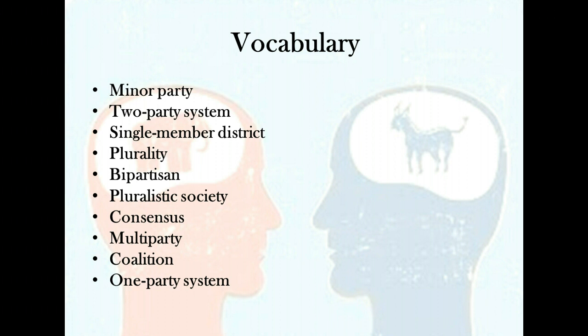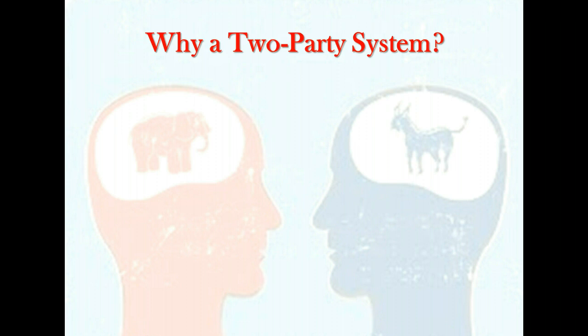Does the name Earl Dodge mean anything to you? Probably not. Yet Mr. Dodge has run for President of the United States five times. He was the presidential candidate of the Prohibition Party in 1984, 1988, 1992, 1996, and again in 2000.